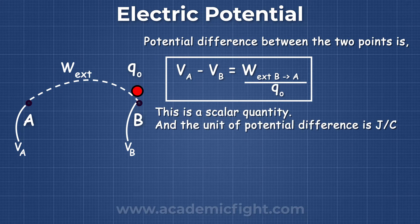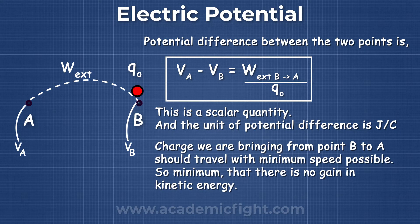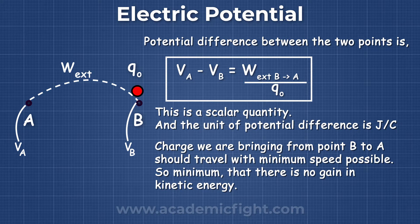This is a scalar quantity, and the unit of potential difference is Joule per coulomb. Now one thing to take note of is, the charge which we are bringing from point B to point A should travel with minimum speed possible, so minimum that there should be no gain in kinetic energy.